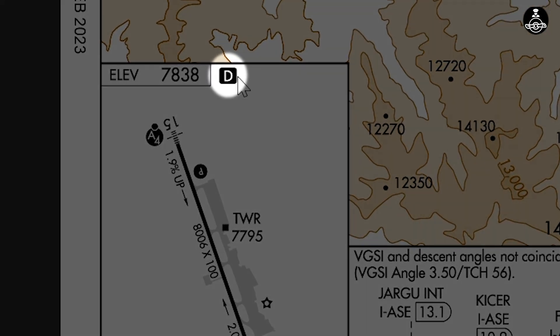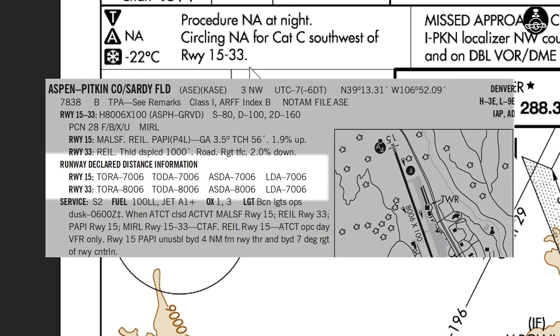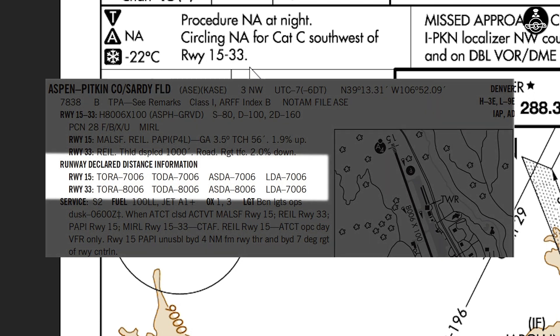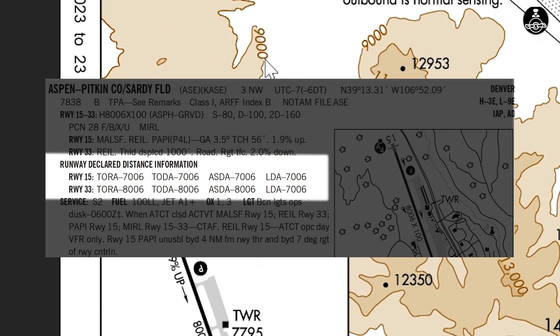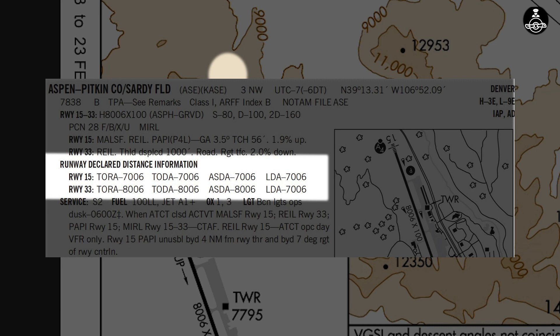The next symbol we sometimes miss is this little 'D'. The D stands for declared distance information. Declared distance information is available in the chart supplement for this airport, where it tells you the accelerate-stop distance available, takeoff run available, takeoff distance available, landing distance available, etc. If you have a D on the approach plate, it means you can refer to the chart supplement to find all of those declared distances.